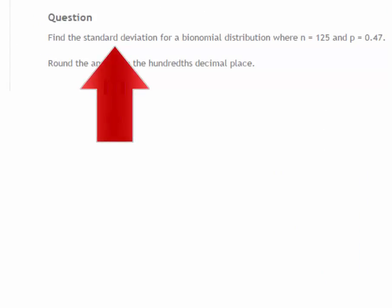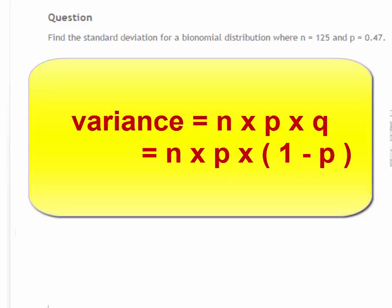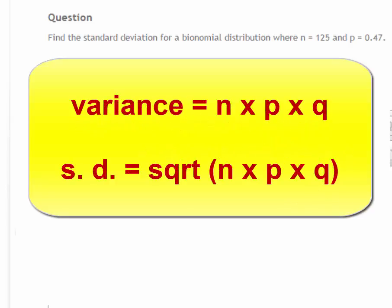Here we have a similar problem where we're asked to find the standard deviation for a binomial probability distribution. The variance equals n times p times q, where q is 1 minus p. Since the standard deviation is the square root of the variance, we'll take the square root of n times p times q.